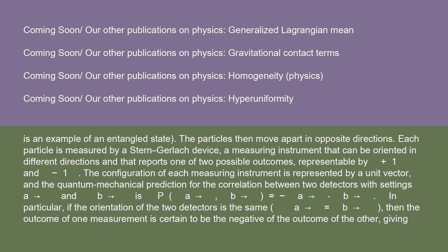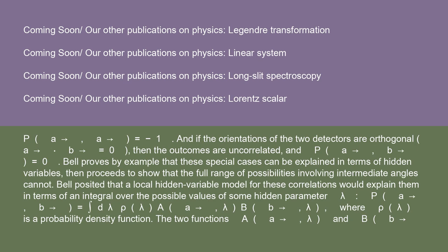The Stern-Gerlach device can be oriented in different directions and reports one of two possible outcomes, representable by plus one and minus one. The configuration of each measuring instrument is represented by a unit vector, and the quantum mechanical prediction for the correlation between two detectors with settings a and b is P(a,b) = −a·b. In particular, if the orientation of the two detectors is the same (a = b), then the outcome of one measurement is certain to be the negative of the other, giving P(a,a) = −1. If the orientations are orthogonal (a·b = 0), the outcomes are uncorrelated and P(a,b) = 0. Bell proves by example that these special cases can be explained in terms of hidden variables, then shows that the full range involving intermediate angles cannot.